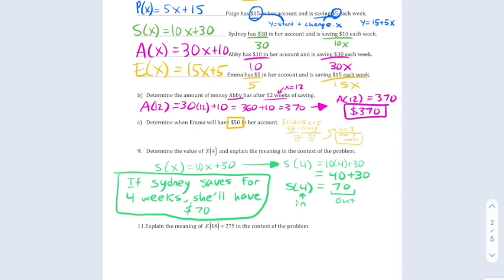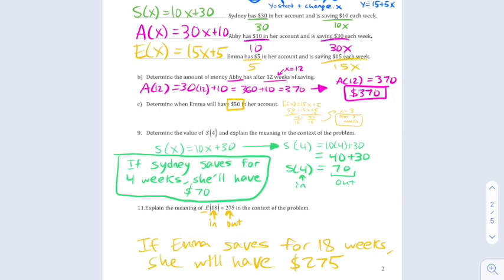Now, one more example. They're going to tell us e of 18 equals 275. This time we don't have to determine the value like last problem. They're already giving it to us. They just want us to interpret it. Remember, 18 is the input and 275 is the output. This is Emma's function. So if Emma saves for 18 weeks, she'll have $275. And that's all you have to do. You just have to interpret what the function notation means in context.